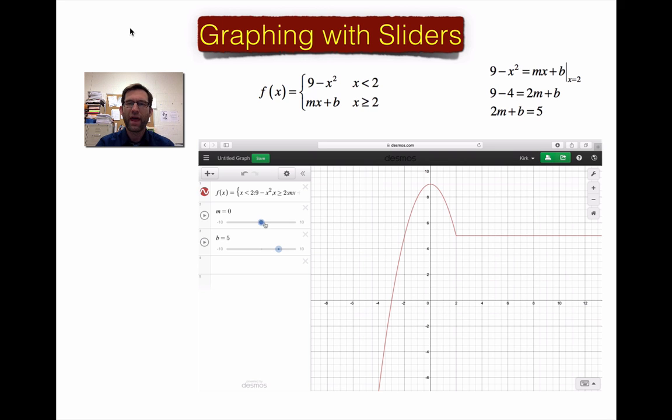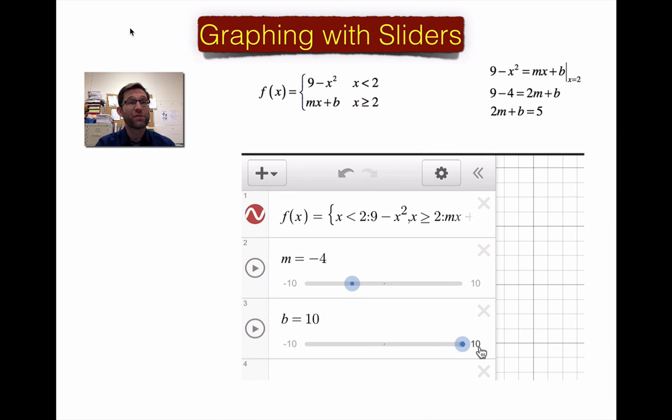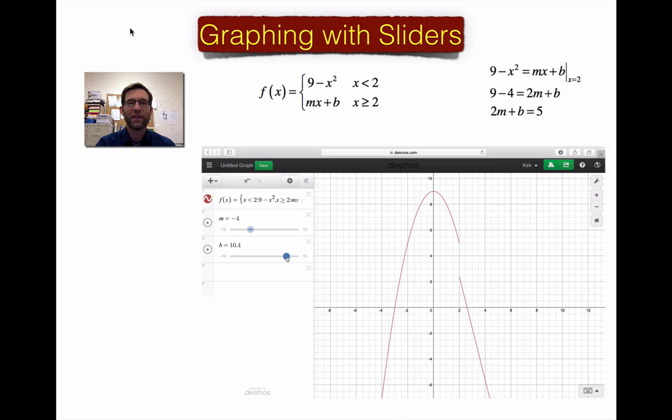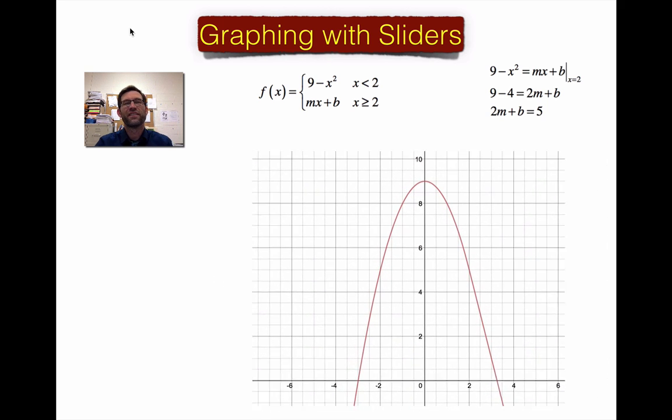I even figured out the m and b combination that will make this graph not just continuous, but also differentiable. And that happens to be when m is negative 4. Now, if m is negative 4, b is going to have to be 13. Uh-oh. And my slider isn't big enough. In other words, my slider right now for b just goes between negative 10 and 10. All I have to do is click this upper limit or maybe double click on it. Now it allows me to change that upper limit. I think I'm going to make it into a 15. I need it to be at least 13. I change it into a 15. Exit back out. Now I can slide that up to 13 and take a look at that. We now have a nice continuous and smooth curve.